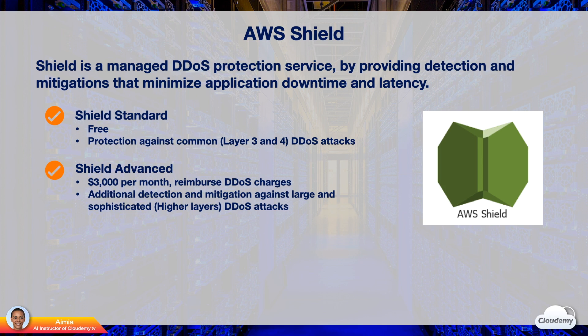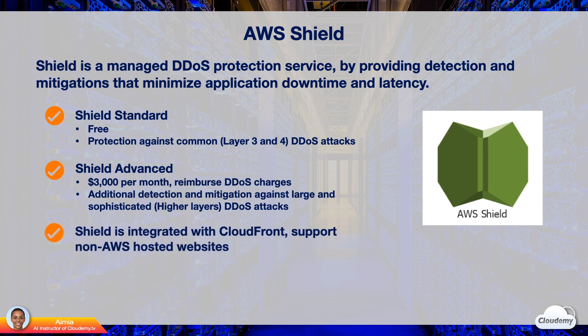Shield Advanced is available globally on all Amazon CloudFront, AWS Global Accelerator, and Amazon Route 53 edge locations. AWS Shield is integrated with CloudFront, which supports custom origins outside of AWS. You can protect your web applications hosted anywhere in the world by deploying CloudFront in front of your application. Your origin can be S3, EC2, ELB, or custom servers outside of AWS.